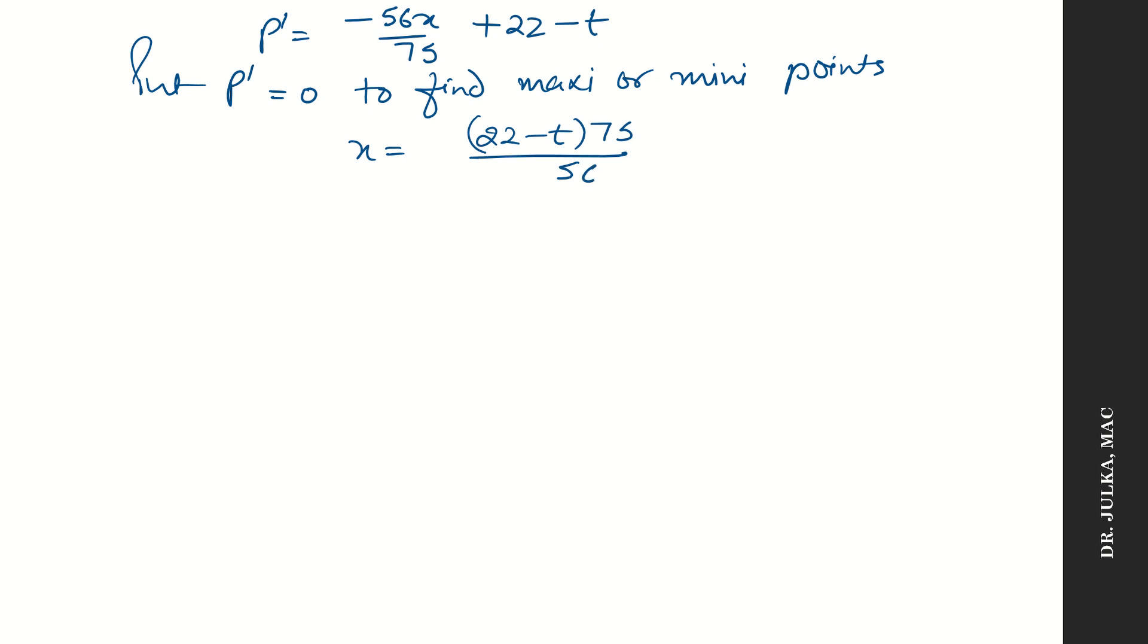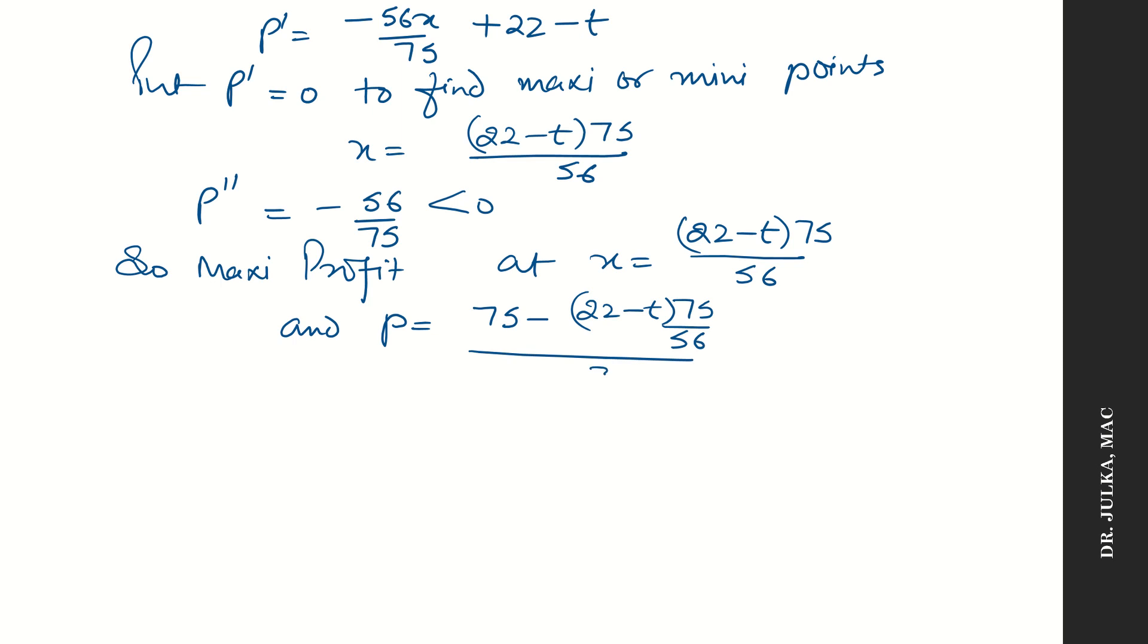Now the double derivative is minus 56 by 75. Since double derivative is negative, maximum profit at x equals to (22 minus t) multiplied by 75 divided by 56. And if we want to calculate p, put the value of x in the demand function.